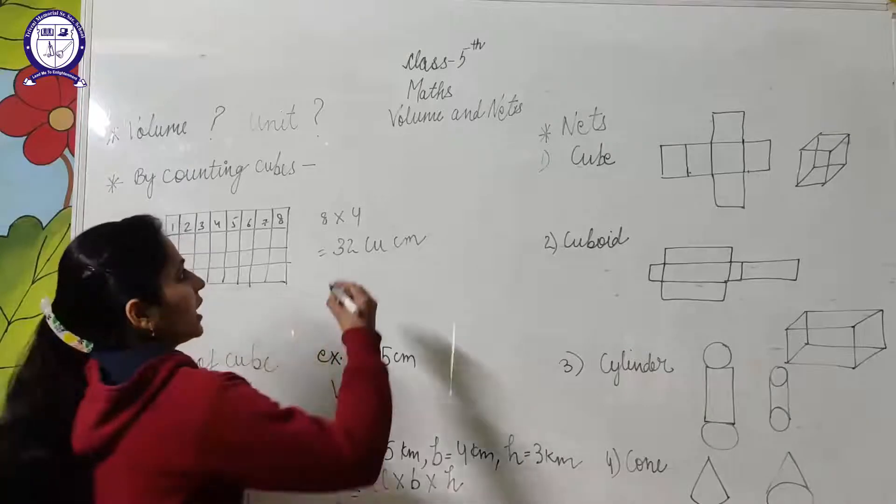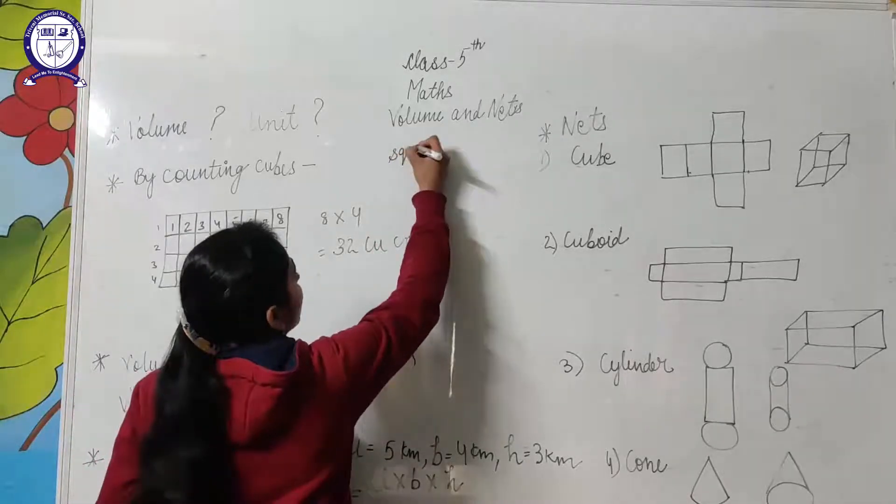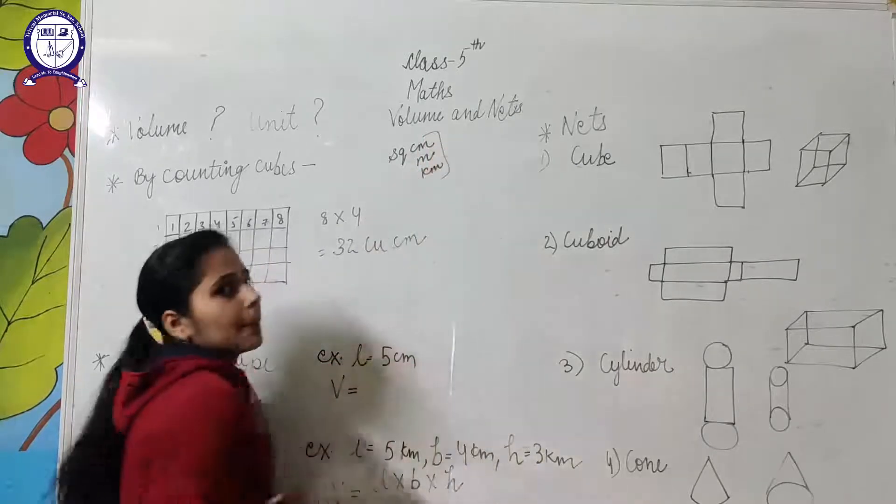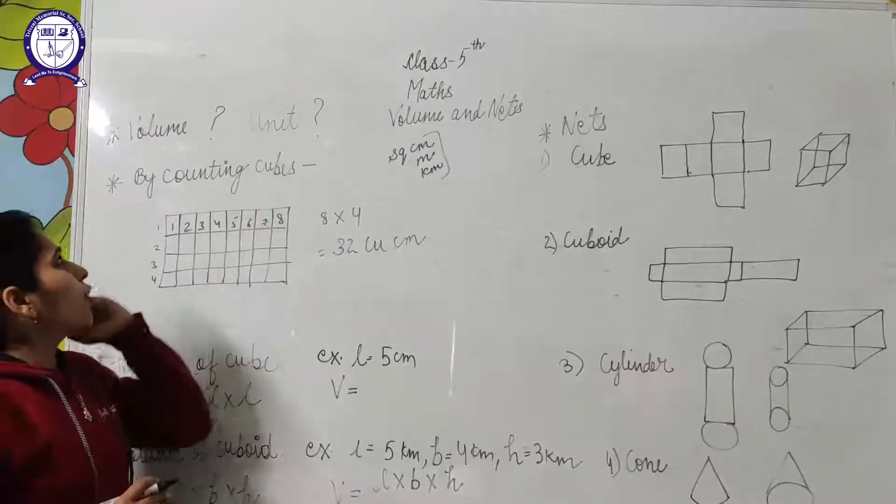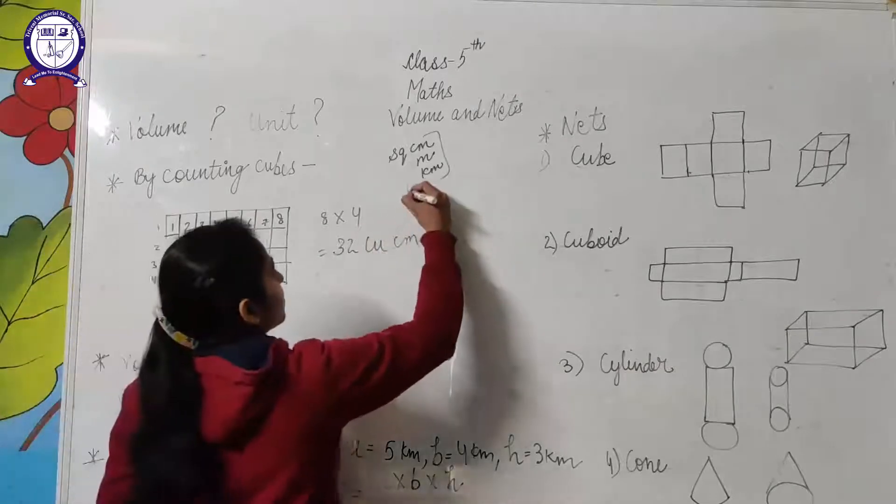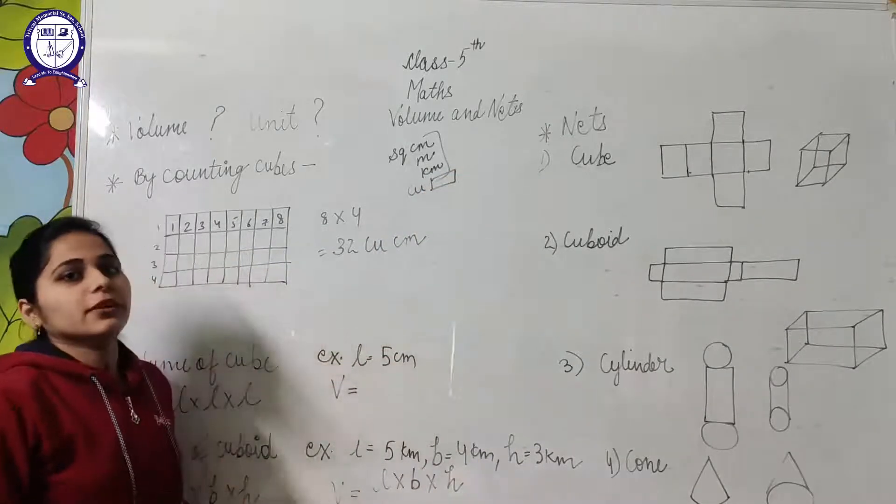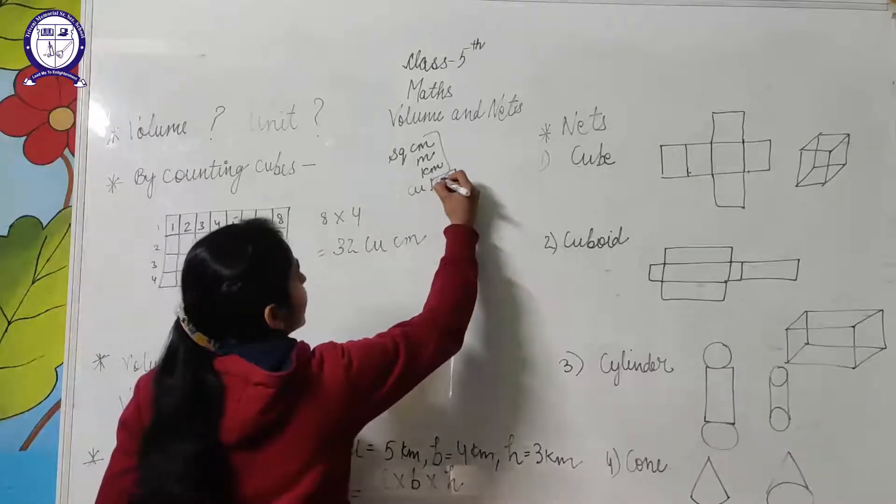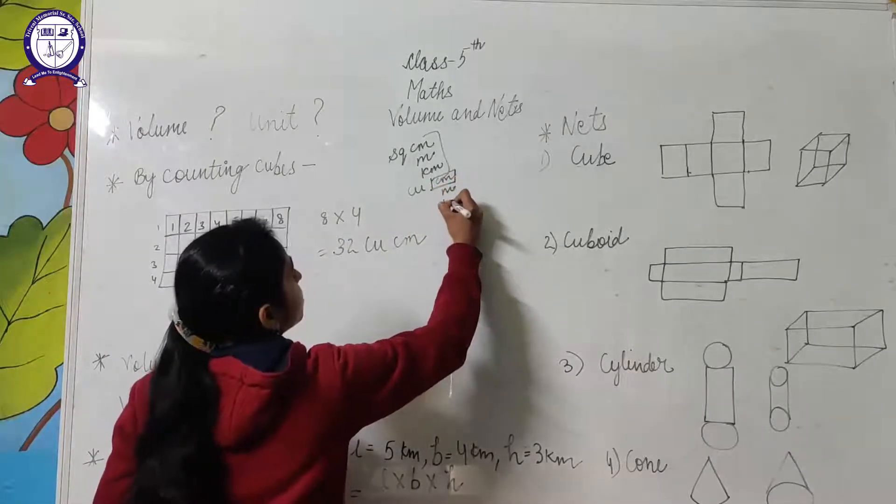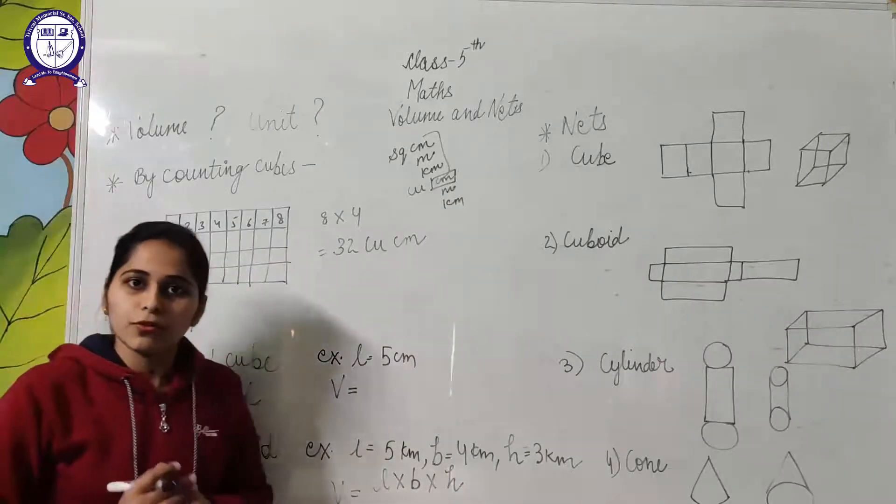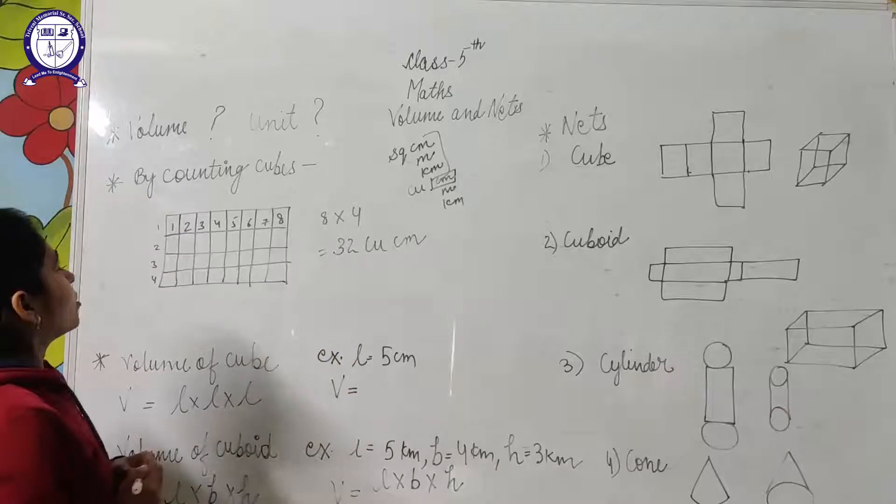Now, the unit of volume. As you know that in area we use square centimeter, square meter, square kilometer. But in the volume case, the unit will be cube plus the unit of length or the edge that has been given. Cube centimeter, cube meter, cube kilometer, because we multiply three dimensions in the case of volume.